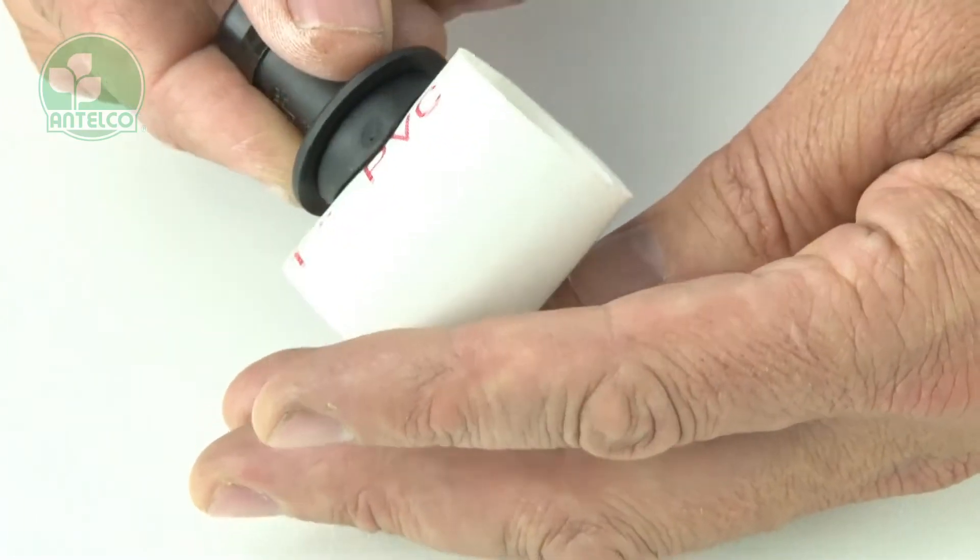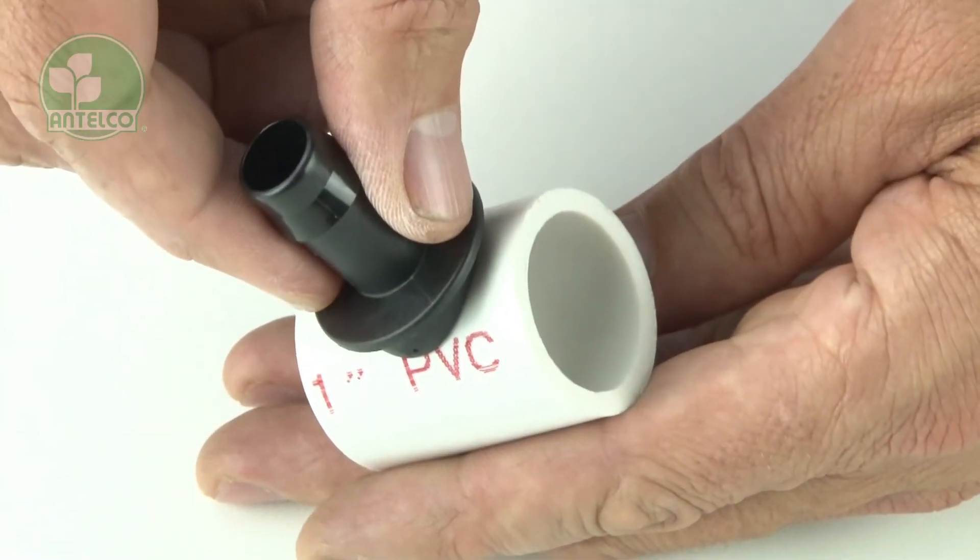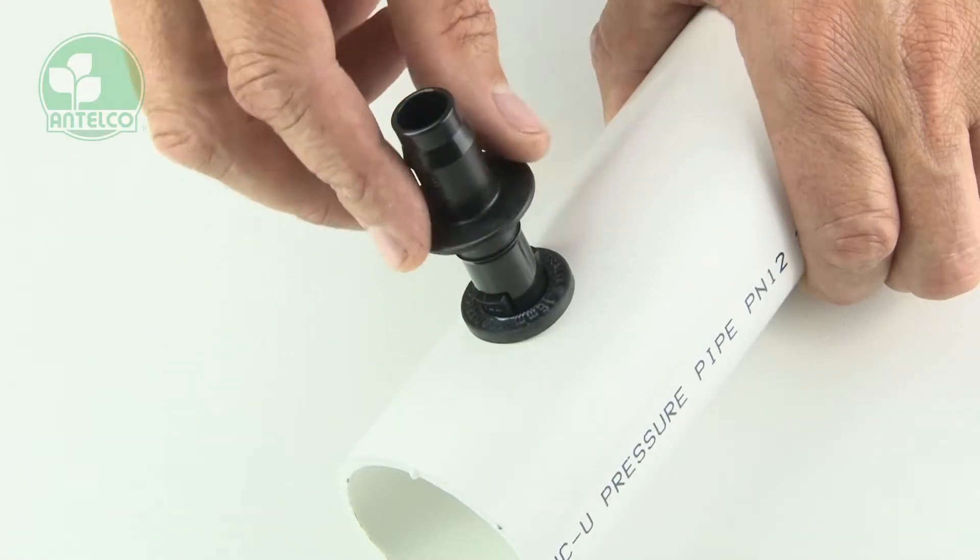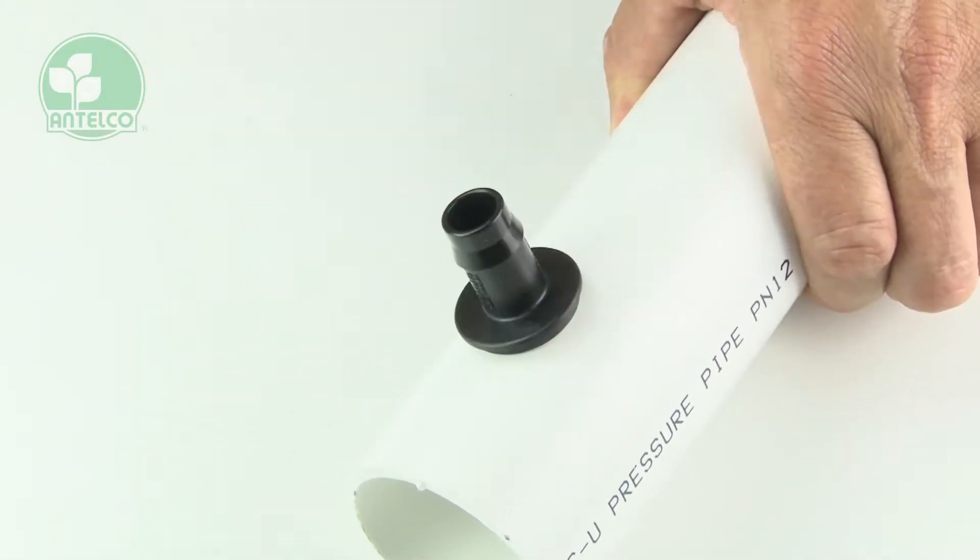The Xpando also has a large flange to both protect the grommet from UV damage in exposed installations and provide a large surface area to push against when installing.